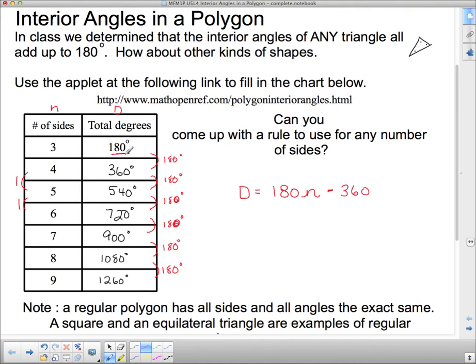So 180 minus 360, because that's what I get if I take here and I go backwards through my chart, 180n minus 360, where this is our rate of change, and this would be our initial value. Although we don't have the initial value on here because we've got to backtrack, we've got to go back a couple of spaces.